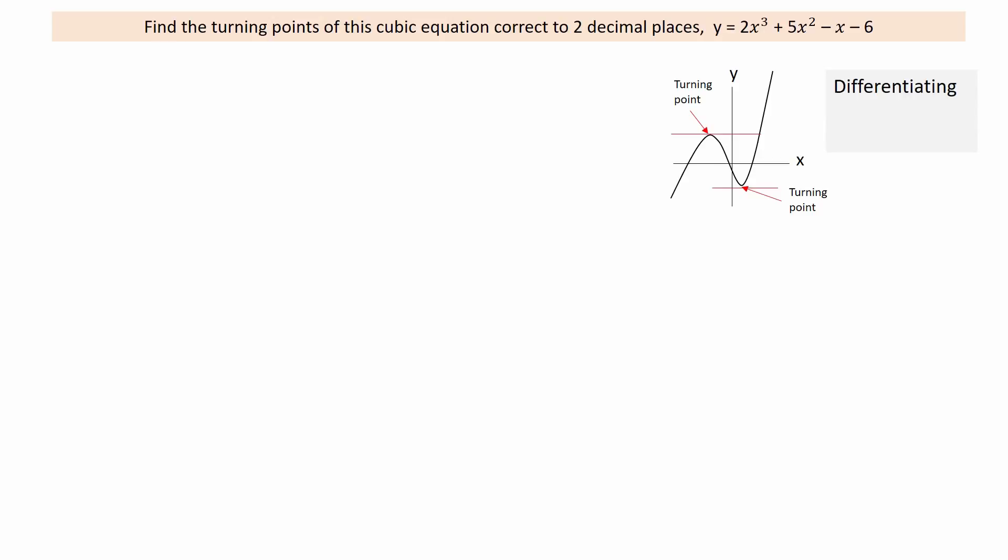Differentiating the cubic equation gives the derivative, which is the rate of change of the function at a point, equivalent to the gradient of a tangent drawn at a point.